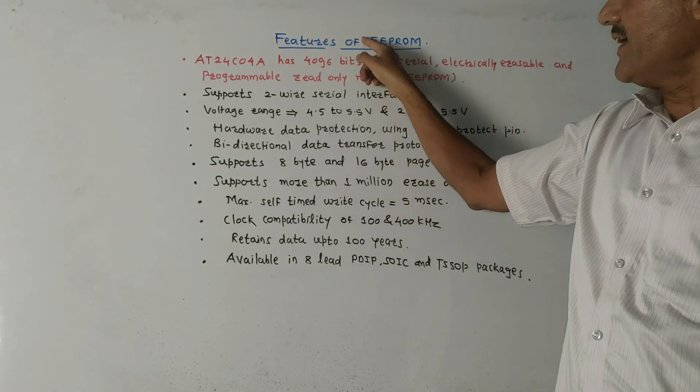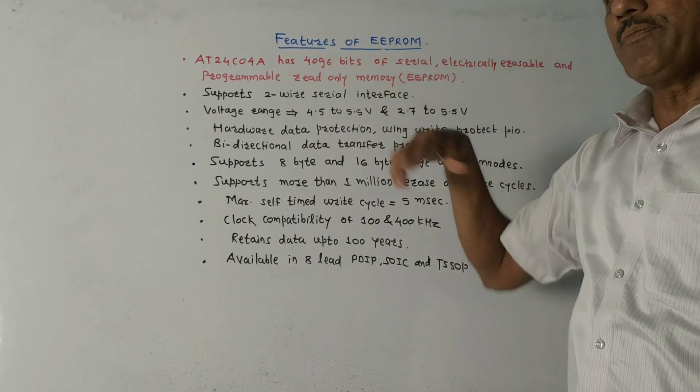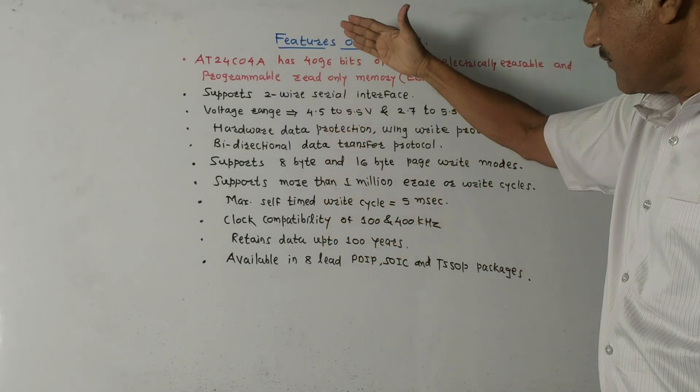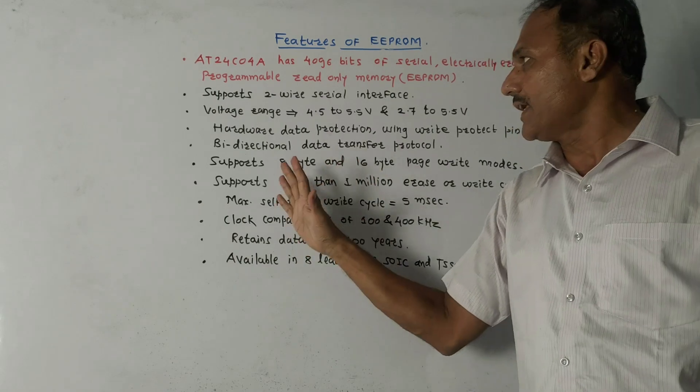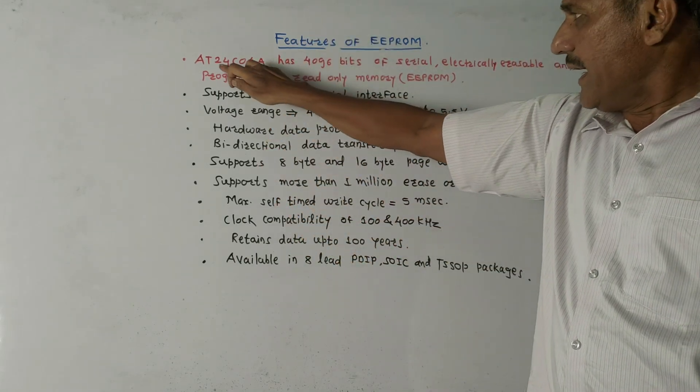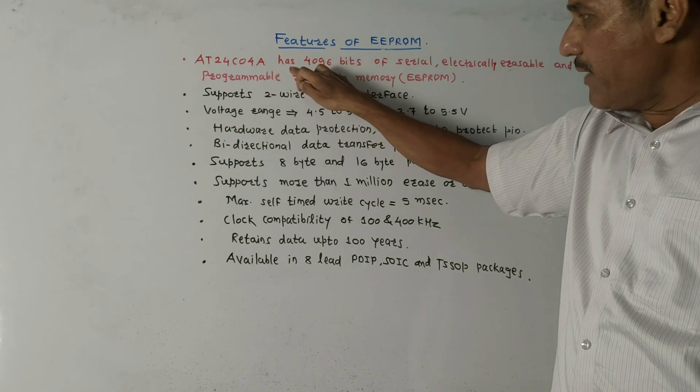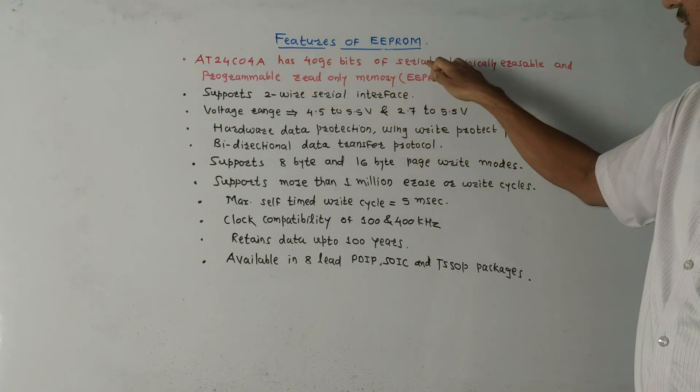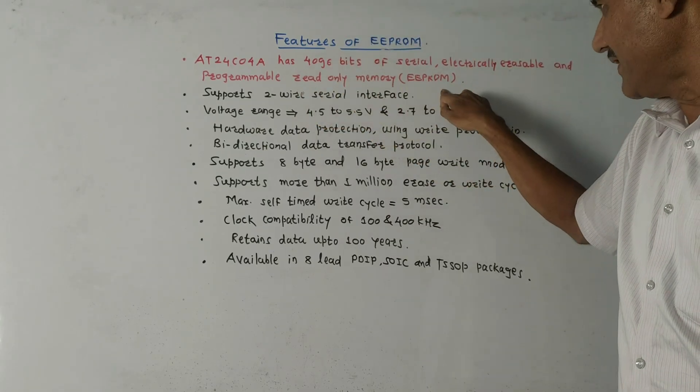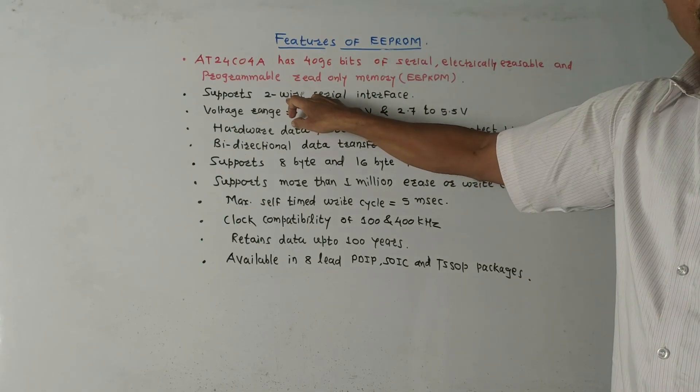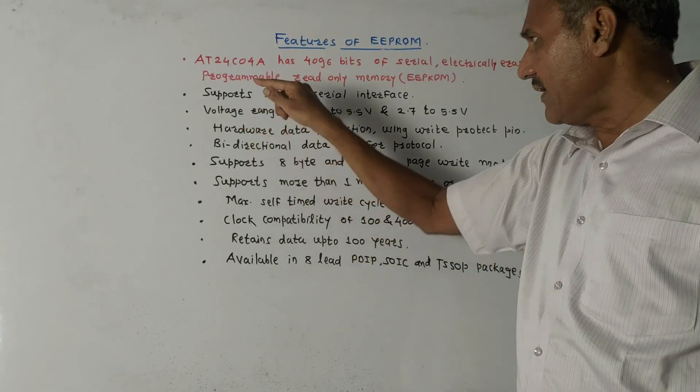EEPROM, that is electrically erasable programmable read-only memory. From exam point of view we may expect features of EEPROM and interfacing diagram. AT24C04A EEPROM has 4096 bits of serial electrically erasable programmable read-only memory. It supports I2C two-wire serial interface.